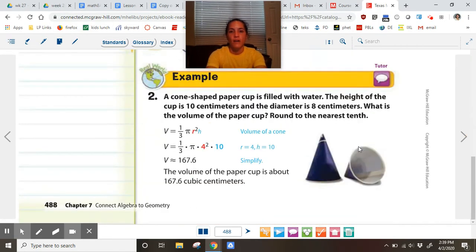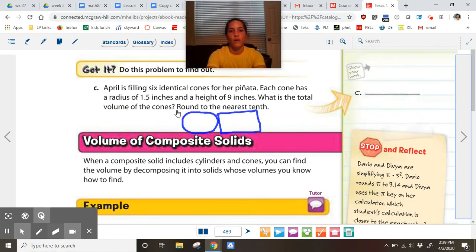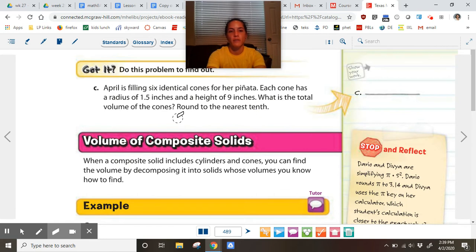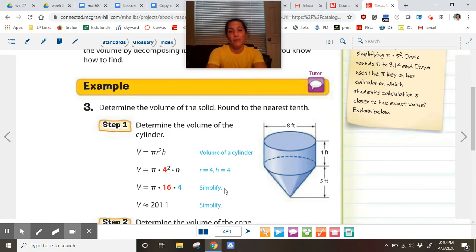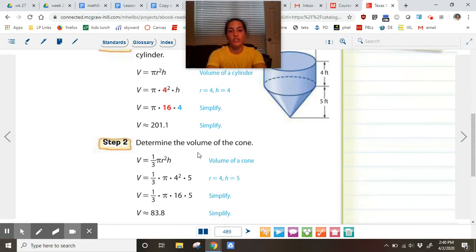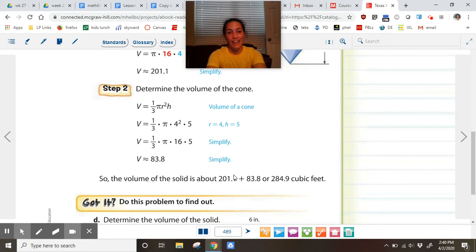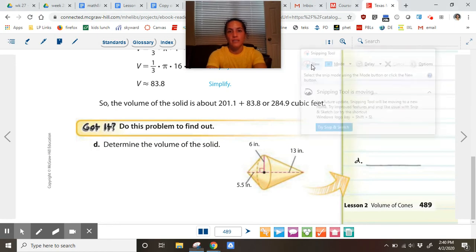There's another example down at the bottom about a cone-shaped paper cup. Next page: volume of composite solids. We did composites with cylinders, and now we're just going to add cones to it. Here's an example already done for you: first they determine the volume of the cylinder, then they did the volume of the cone, and then they added it together. Let's do this example.